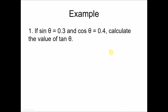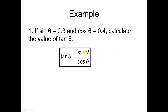Example: if sine θ equals 0.3 and cosine θ equals 0.4, calculate tangent θ. Using the formula tangent θ = sine θ over cosine θ, we get 0.3 over 0.4, which simplifies to 0.75.